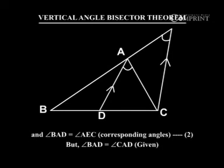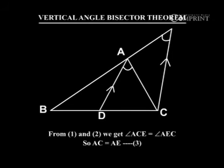But angle BAD equal to angle CAD (given). Therefore from 1 and 2 we get angle ACE equal to angle AEC. So AC equal to AE from equation 3.